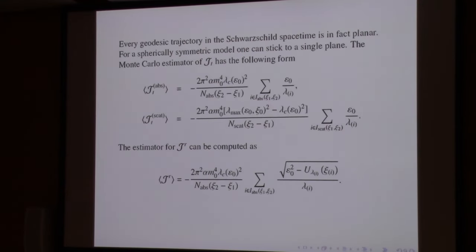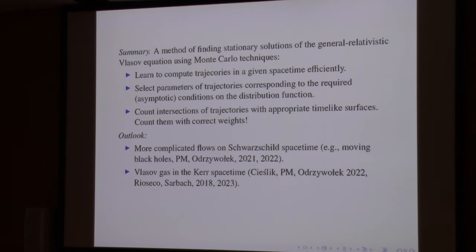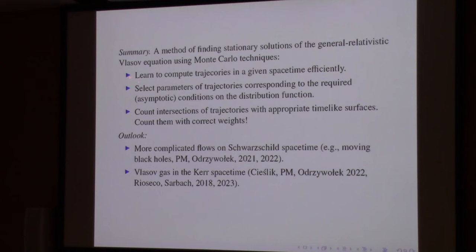In summary, this is a proposition for a Monte Carlo technique worked out in the most elementary case — a fixed Schwarzschild background — but capturing what is essential. For instance, the planar model works differently than the three-dimensional model. The prescription is: you have to learn how to select parameters of the trajectories with conditions imposed asymptotically. Then you count the intersections of trajectories with appropriate — in the case of stationary systems — time-like surfaces, with correct weights.